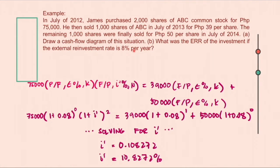So solving that, this is $75,000 times 1 plus 0.08 raised to 0, that is still $75,000. And then multiply that with 1 plus i' squared.